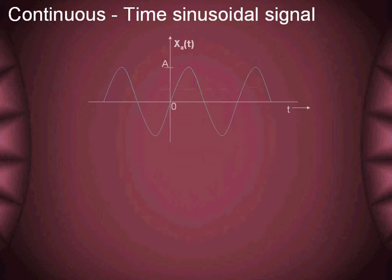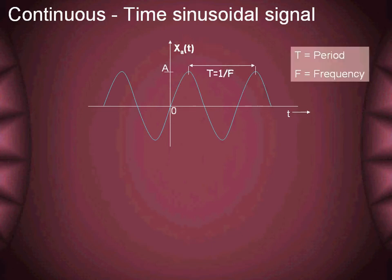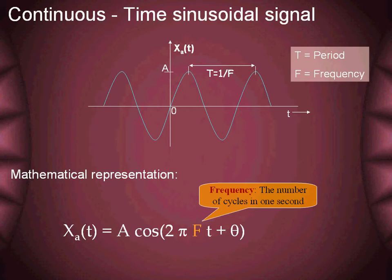Initially, we will begin with the continuous time sinusoidal signal. A indicates the amplitude of the signal. The amount of time required to complete one full cycle of the wave is called the fundamental period, the inverse of which is the frequency of the signal. This simple harmonic oscillation is mathematically expressed in terms of amplitude and frequency. This frequency is called the analog frequency, defined as the number of cycles or oscillations in one second.